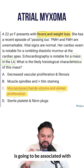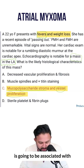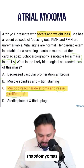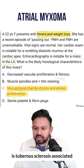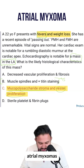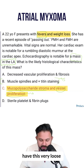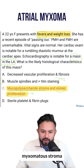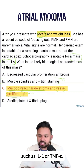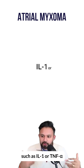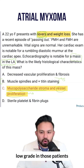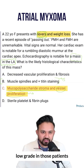A rhabdomyoma is going to be associated with answer choice B — rhabdomyoma is tuberous sclerosis associated. And remember, atrial myxomas have this very loose myxomatous stroma, and there are going to be cytokines such as IL-1 or TNF-alpha, which is why you can get that low-grade fever in those patients.